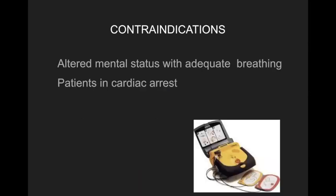Indications: if you suspect opioid overdose with altered mental status, check for hypoventilation and apnea — slow, shallow breathing. If these things are all combined together, this is when the drug is indicated. Contraindication: if the patient has adequate breathing, do not give this medication even if they have altered mental status. We're most concerned about breathing issues. If they're breathing fine, don't give it. If a patient is in cardiac arrest, it's futile to give this drug — ALS intervention is required first.